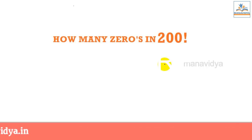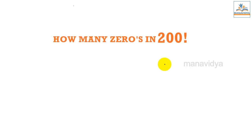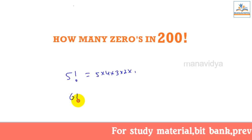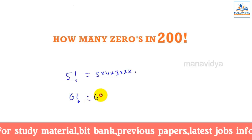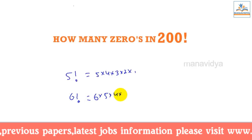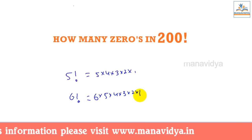In 200 factorial, the definition is, for example, 5 factorial. 5 factorial means 5 into 4 into 3 into 2 into 1. That means the product. For example, what about 6 factorial? 6 into 5 into 4 into 3 into 2 into 1.